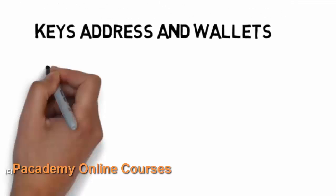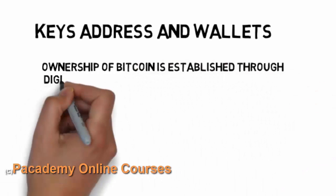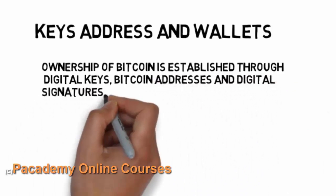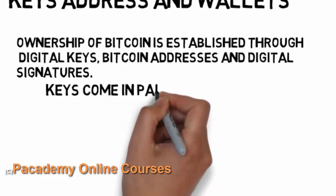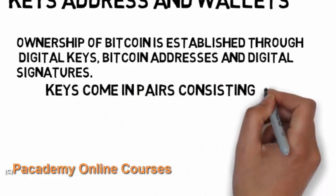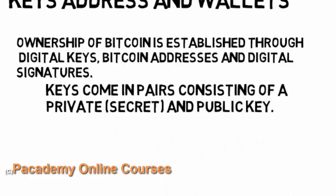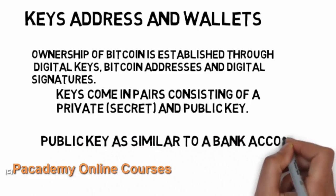The next thing to know about is keys, addresses, and wallets. Once you have Bitcoin installed, this is a system which works like banks — there should be something to validate that you own a certain amount of Bitcoin and to validate each transaction on the network. Ownership of Bitcoin is established through digital keys, a Bitcoin address, and digital signatures. The digital keys come in pairs: a private key and a public key.